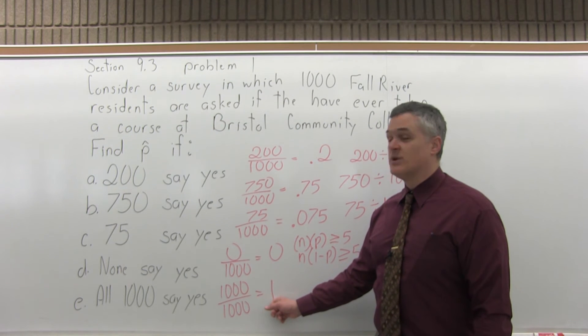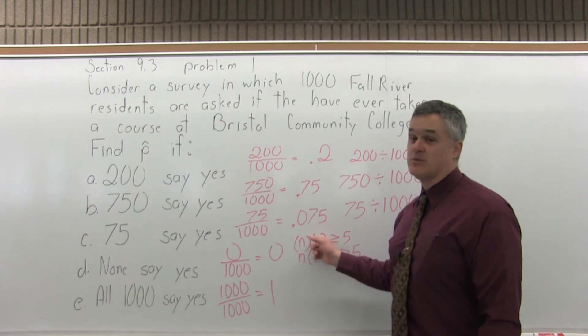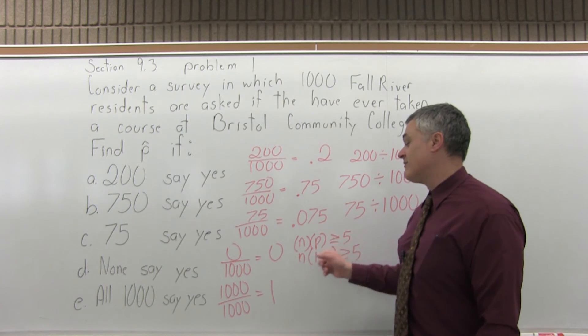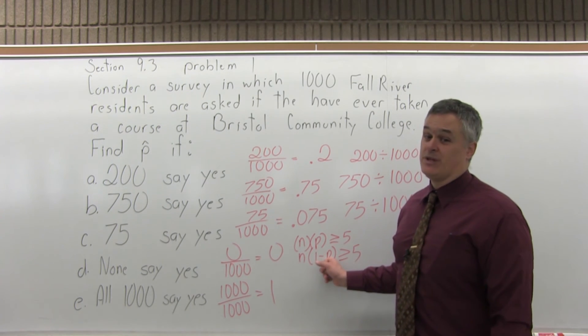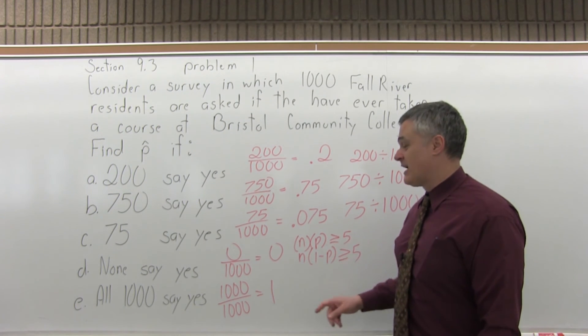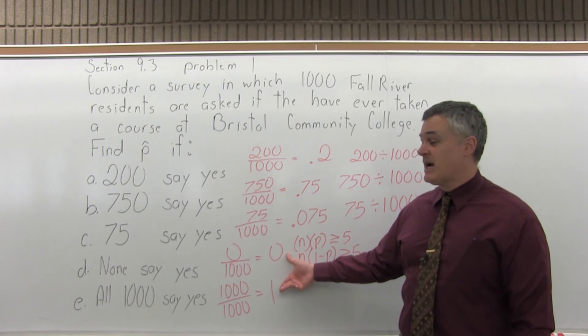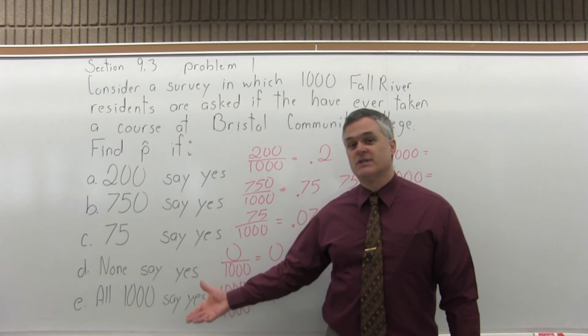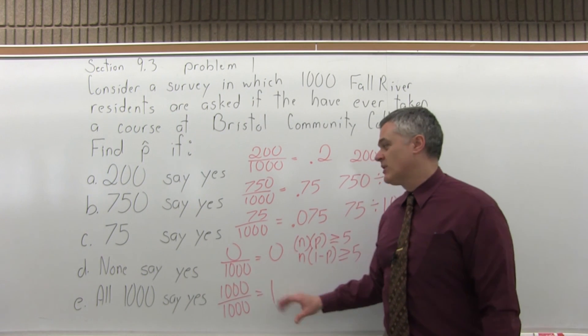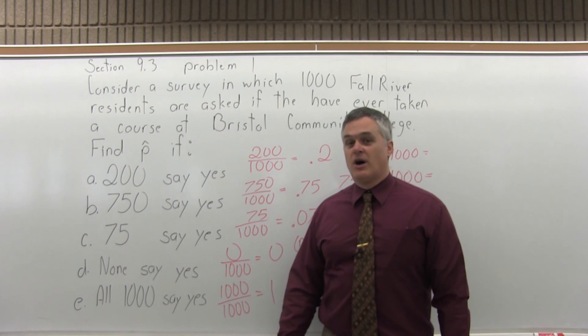The same thing is true when P-hat is 1. n times P, 1,000 times 1 is certainly bigger than 5, but n times 1 minus P would then be 1,000 times 0, which is not bigger than 5. The bottom two, 0 and 1, are values for P-hat, but those values would be inappropriate to try and make a confidence interval out of them. The others, A, B, and C would be fine, but D and E would not.